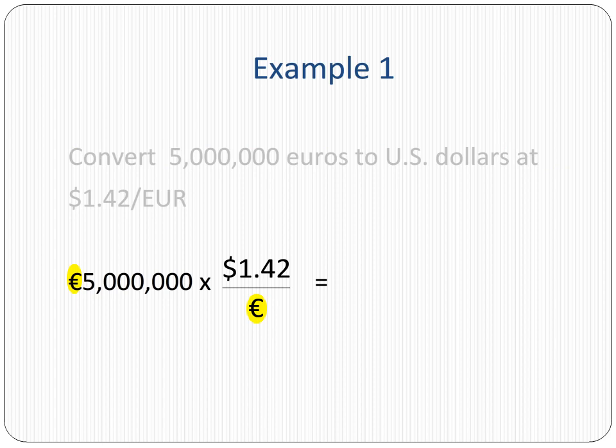Next, we'll look to see where the euro appears in the code provided. When the currency we are trying to convert appears in the denominator of the code, we multiply. That's what we are going to do in this example: multiply. Mathematically, the two euro signs cancel each other out and we wind up with a dollar amount.